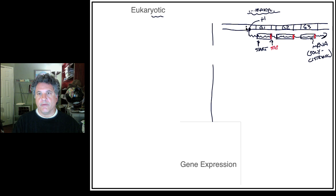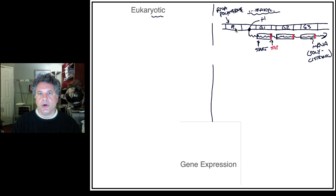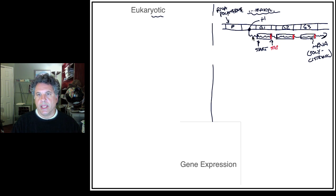Upstream of the plus one transcription start site there is a sequence of DNA which is the promoter. It is to the promoter that RNA polymerase binds through mechanisms we've already discussed. The sigma subunit of the RNA polymerase binds to the promoter and loads the polymerase. As transcription begins, the sigma subunit is released and elongation of the mRNA occurs.